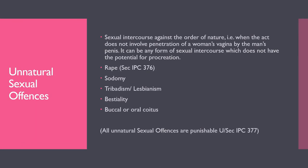Unnatural sexual offenses are those involving sexual intercourse against the order of nature — when the act does not involve penetration of a woman's vagina by a man's penis. It includes any form of sexual intercourse that does not have the potential for procreation. After recent amendment, rape is also included in unnatural sexual offenses when sexual intercourse is done without the will or consent of the woman.